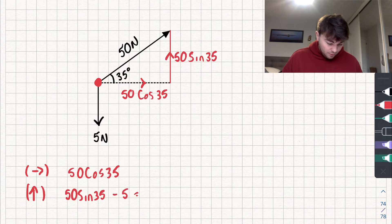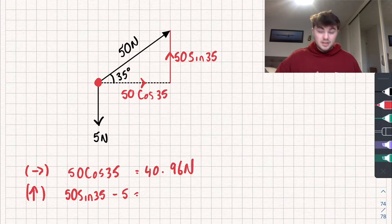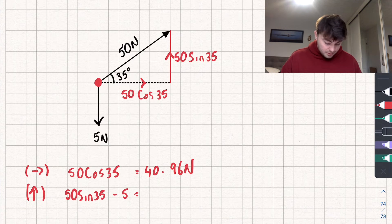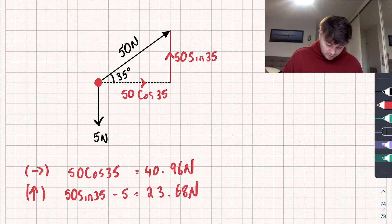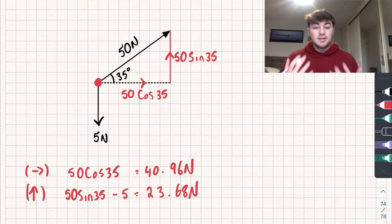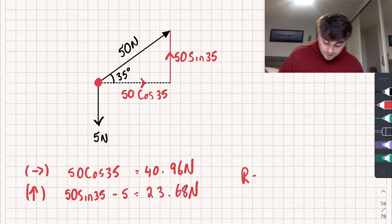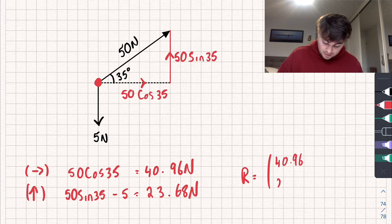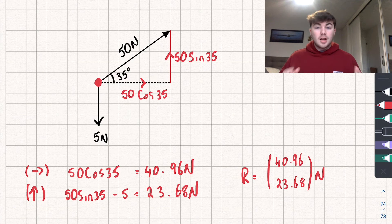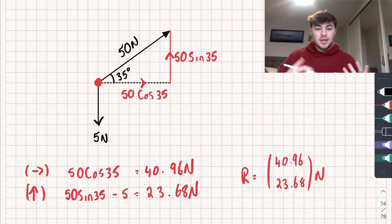Using a calculator: 50 cos 35 is approximately 40.96 newtons in the positive right direction. Vertically, 50 sin 35 minus 5 newtons gives approximately 23.68 newtons acting upwards. So we can represent this resultant force as a vector R = (40.96, 23.68) newtons. Now let's move on to an exam question where we'll also calculate the magnitude and direction of the resultant force.